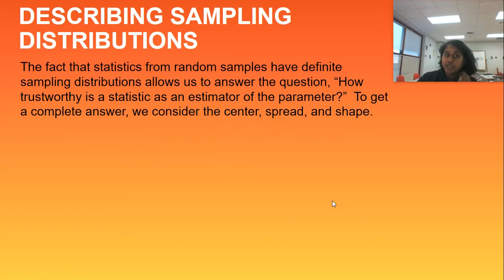How do we actually describe sampling distributions? The fact that statistics for random samples have definite sampling distributions allows us to answer this question: How trustworthy is a statistic as an estimator of the parameter?